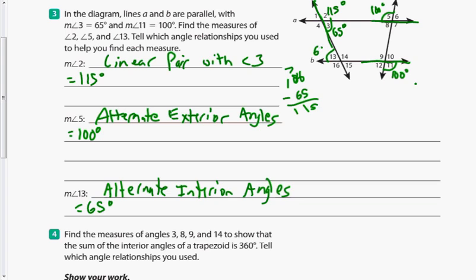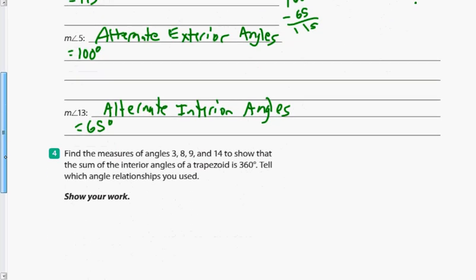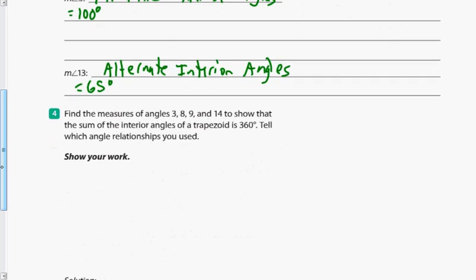Pretty easy, as long as you can tell what type of angles they are. Sometimes they don't even look congruent, so you can tell they're not. Number 4 says: find the measures of angles 3, 8, 9, and 14 to show that the sum of the interior angles of a trapezoid is 360 degrees.